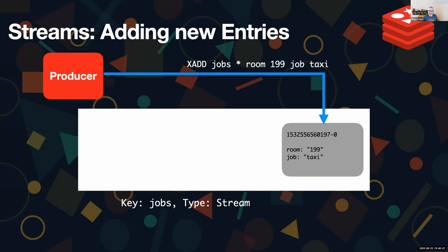As we keep putting things in the stream, they'll sort of line up in a nice order - and they're immutable. We can delete them, but we can't change them. So that entry ending in 197 is always going to be a taxi for room 199 - that's kind of important for audit scenarios. We can logically delete it so that consumers don't see it, but an audit trail would. But we cannot change it.